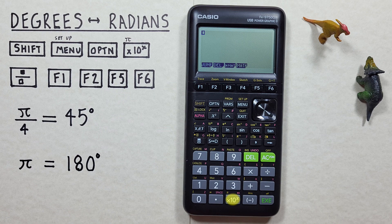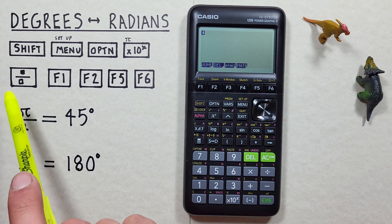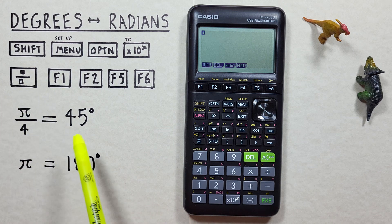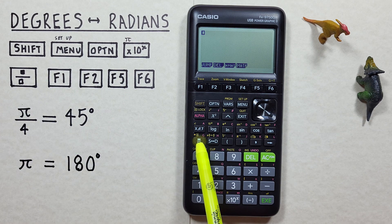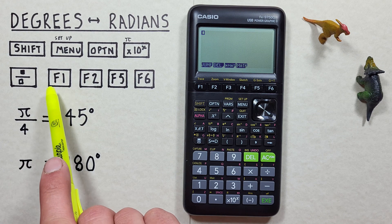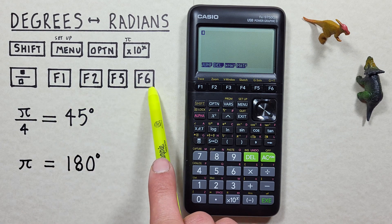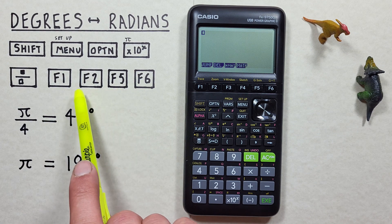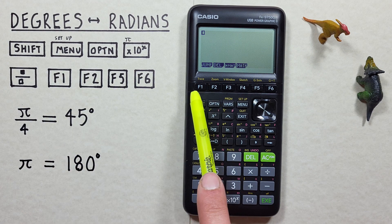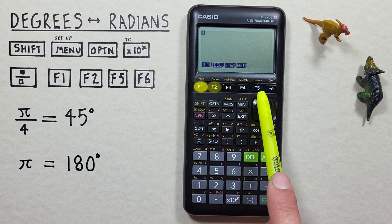The fraction key, that looks like this, located here. And the f1, f2, f5, and f6 keys that look like this, located across the top up here.